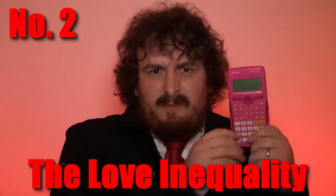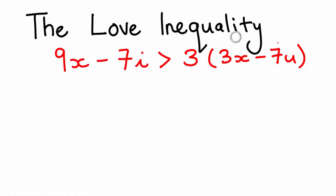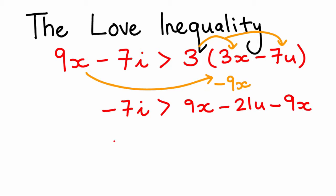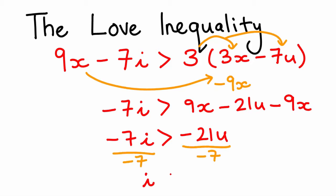Number two: the love inequality. Now if you're working at the grade 10 level of love, then you can use this inequality to declare your affection to that special someone. All you have to do is send it to them and tell them to solve for I. It might look hectic at first, but it's actually really simple. We take this over, times that out, simplify what we have there, divide by minus seven, and — aww.